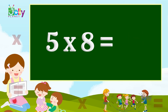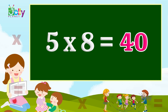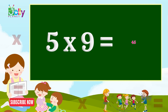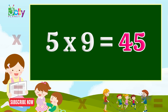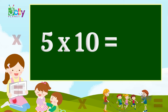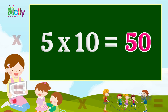Five eights are forty. Five eights are forty. Five nines are forty-five. Five nines are forty-five. Five tens are fifty. Five tens are fifty.